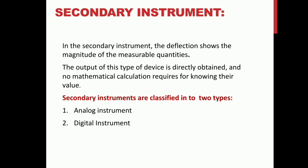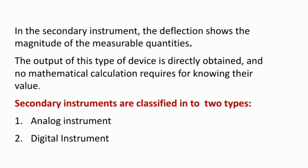Secondary instruments: In a secondary instrument, the deflection of the pointer shows the magnitude of the measurable quantity. The measurement is directly obtained and no mathematical calculation is required for knowing the value.